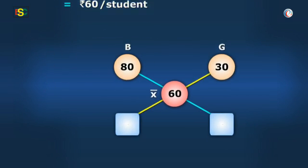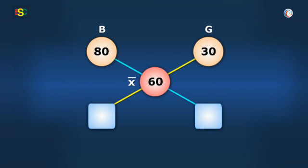Further, computing the cross difference, it is 60 minus 30, that is equal to 30 and 80 minus 60 equals to 20. So, it comes out to be 3 ratio 2. Exactly.